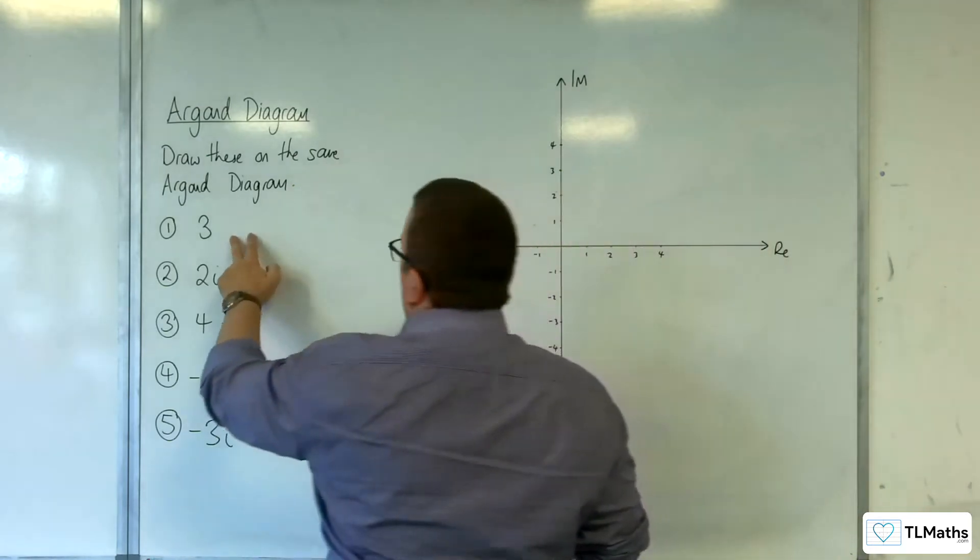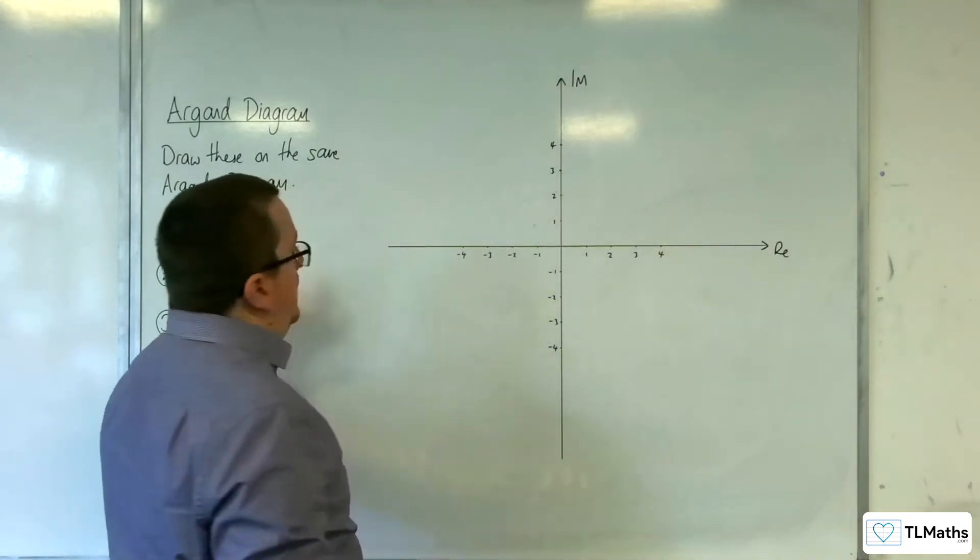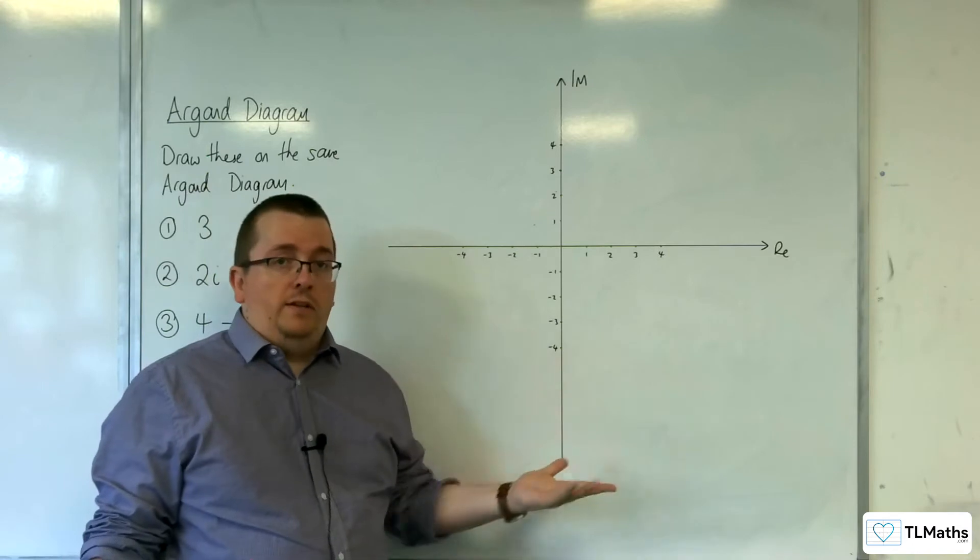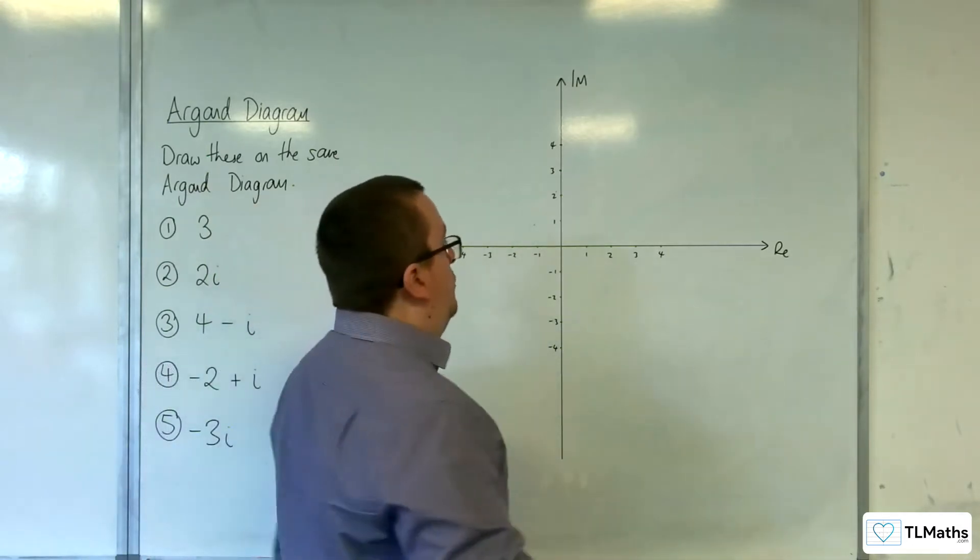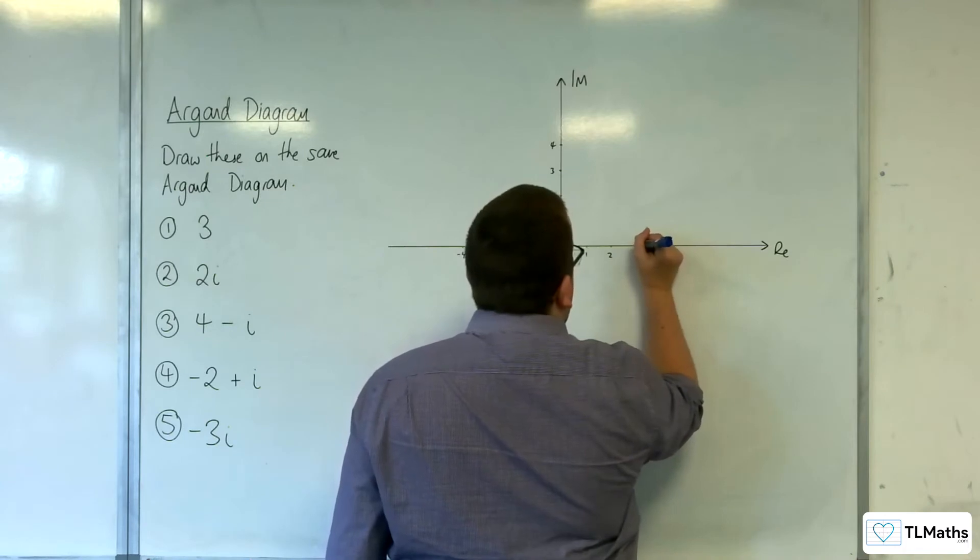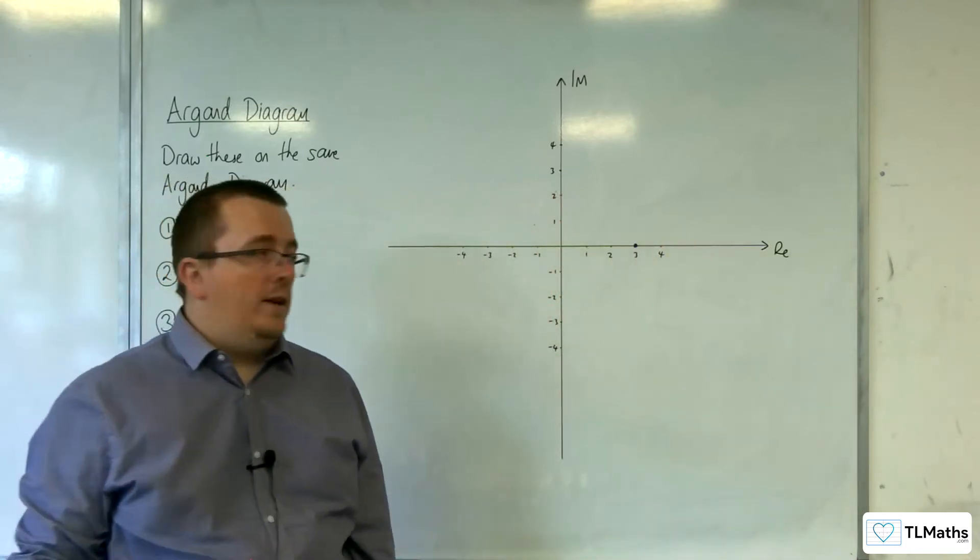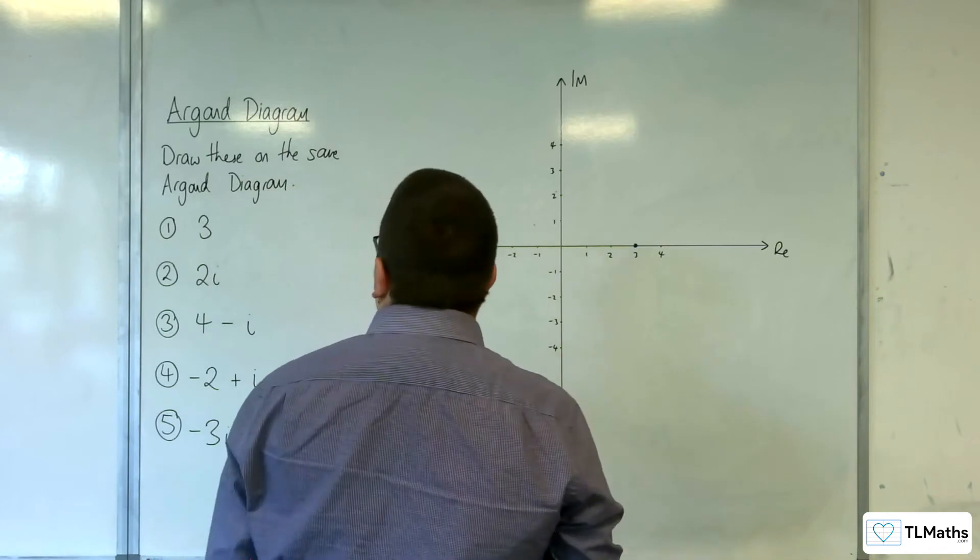Number one then, three, just the number three. The number three is just a real, there's no imaginary part to that. And so three is just that point on an Argand diagram, on the real axis.